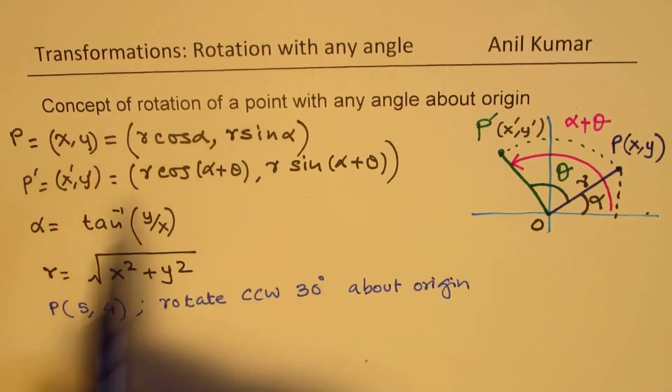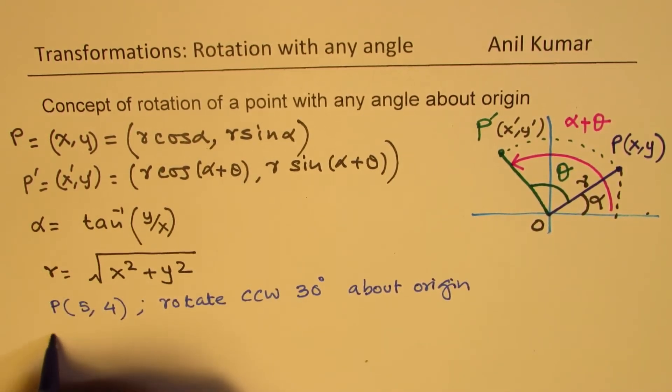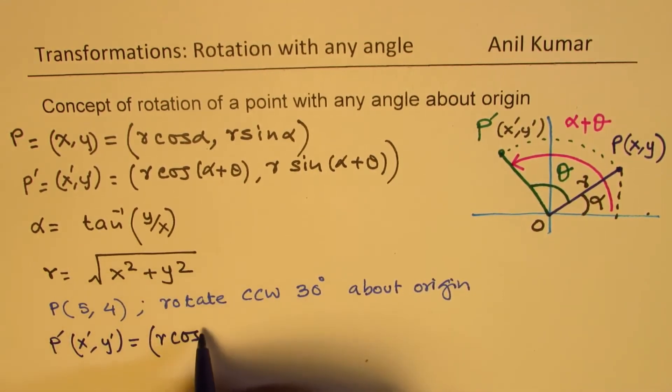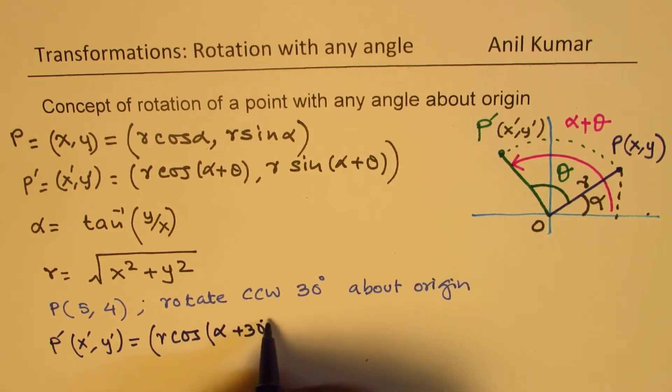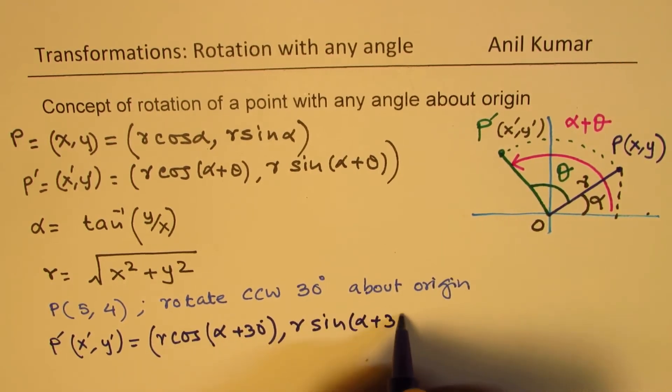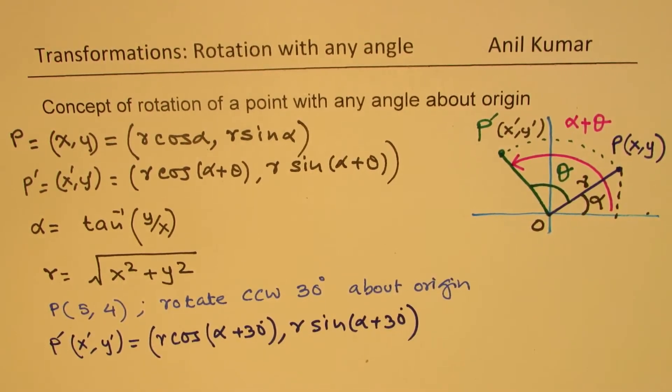So let us see how to do this. Now clearly, from what we discussed, the point P dash will be, let's call it x dash, y dash, will be equal to r cos of, let's say original angle is alpha, and we are doing rotation of 30 degrees. So alpha plus 30 degrees. And the y value will be r sine of alpha plus 30 degrees.